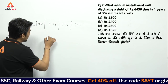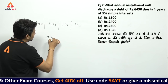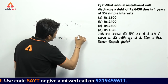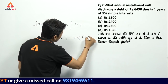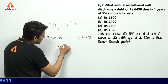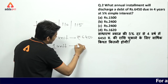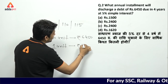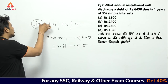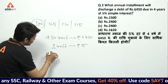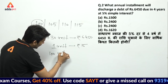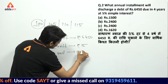So 430 units = 6450 rupees. Divide: 1 unit = 15 rupees. And the installment is 100 units. So 100 units × 15 = 1500 rupees.